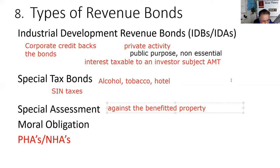Caltrans said they couldn't ask California taxpayers to pay for it since Flying J is the major beneficiary, so they issued special assessment bonds. If you buy these bonds — 'Caltrans Special Assessment Bonds, Highway 99 Off-Ramp 139' — you look at whether Flying J is profitable, because as the Flying J goes, so go the bonds. If the benefited property can't pay, the bonds go bankrupt.